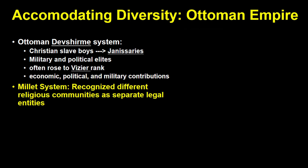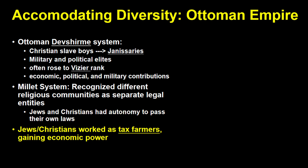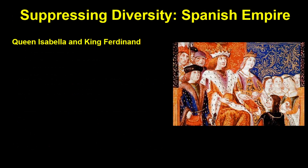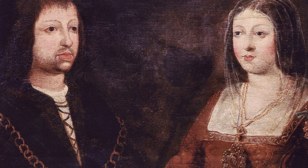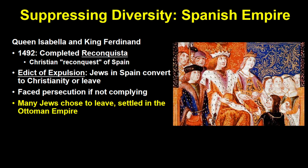Another example of Ottoman accommodation of diversity was the millet system, which recognized different religious communities — such as Jews and Christians — as separate legal entities that could pass their own laws and regulate their own societies. Christians and Jews could also work as tax farmers, gaining considerable economic power. Like in the Mughal Empire, the Ottomans were often more concerned about merit and loyalty than religious conformity. Unlike under Akbar, however, these religious minorities still had to pay the jizya tax. On the other end of the spectrum, the Spanish Empire under Queen Isabella and King Ferdinand completed the Reconquista in 1492 and passed the Edict of Expulsion, giving Jews the choice between converting to Christianity or leaving. Many Jews left and settled in the Ottoman Empire, knowing it was far more tolerant.